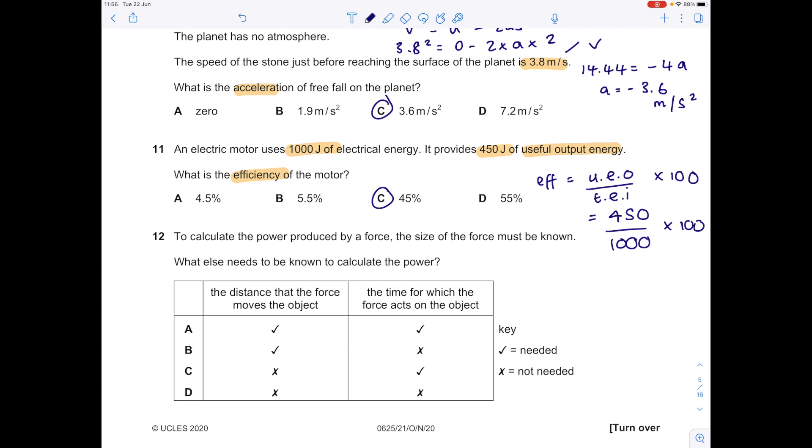To calculate the power produced by force, the size of the force must be known. What else needs to be known to calculate the power? This is where you need really good knowledge of your equations. The ones you need are: we play tennis. This sounds so weird but I used this when I was doing my GCSEs. Work force times distance. So what that's saying is, to calculate power, we need work done over time. So we definitely need time. We need force and distance to plug in. So we've been told here that the force must be known. But what else do we need? We need time and we need distance, which is why A is the answer.